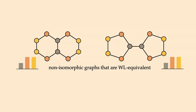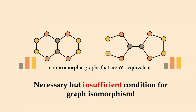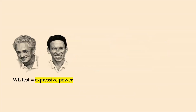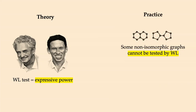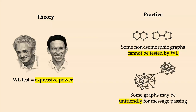If the two color histograms differ, the graphs are definitely non-isomorphic; if they are the same, we don't know — it's a necessary but insufficient condition. The WL test is the standard formalism for describing the expressive power of GNNs, i.e., what functions they can compute. In practice, some graphs are not friendly for message passing: if information must travel from one cluster to another through a single connection — a bottleneck — we need to squeeze a lot of information through that bridge.